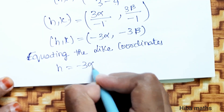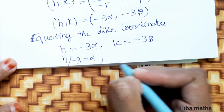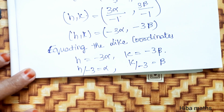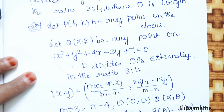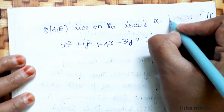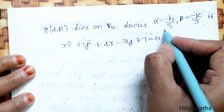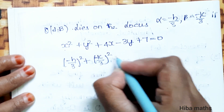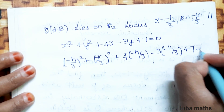From h = -3α, we get α = -h/3. From k = -3β, we get β = -k/3. Since Q = (α, β) lies on the locus, we substitute x = -h/3 and y = -k/3 into the equation: (-h/3)² + (-k/3)² + 4(-h/3) - 3(-k/3) + 7 = 0.